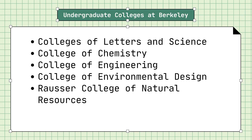These three majors at Berkeley are very popular. For some background information, you may have seen the other videos I've posted recently breaking down the five undergraduate colleges at UC Berkeley. The Computer Science and Data Science majors are in the College of Letters and Science, whereas the EECS major is in the College of Engineering.